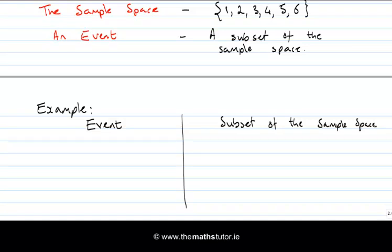We might have the event of rolling a six. It's easy to write down the subset of the sample space here: the set {6}, with one element consisting of six.